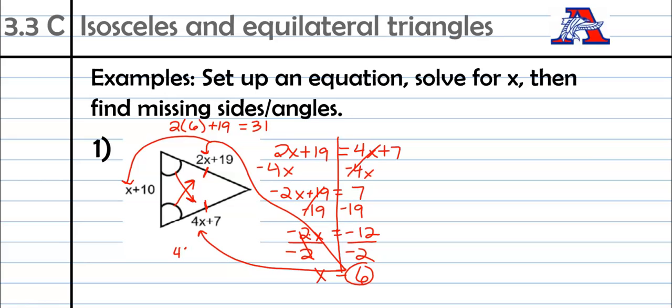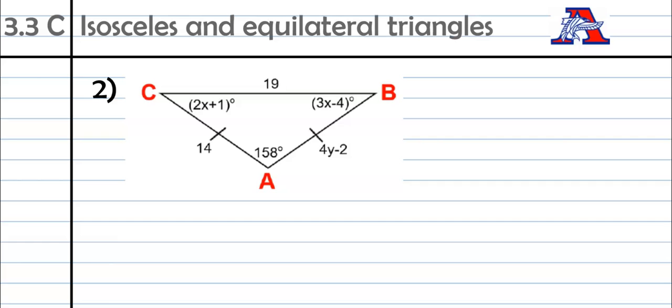And then down here, we have 4 times 6 plus 7. 4 times 6 is 24. 24 plus 7 is 31. So that's good. Those two were supposed to be the same. And it looks like they are the same. So that's great news. Last place then is over here. 6 plus 10 is 16. So that side's not the same. That's the base. And that's fine. It wasn't necessarily supposed to be the same. But it is good news that our isosceles triangle does end up with two congruent sides.